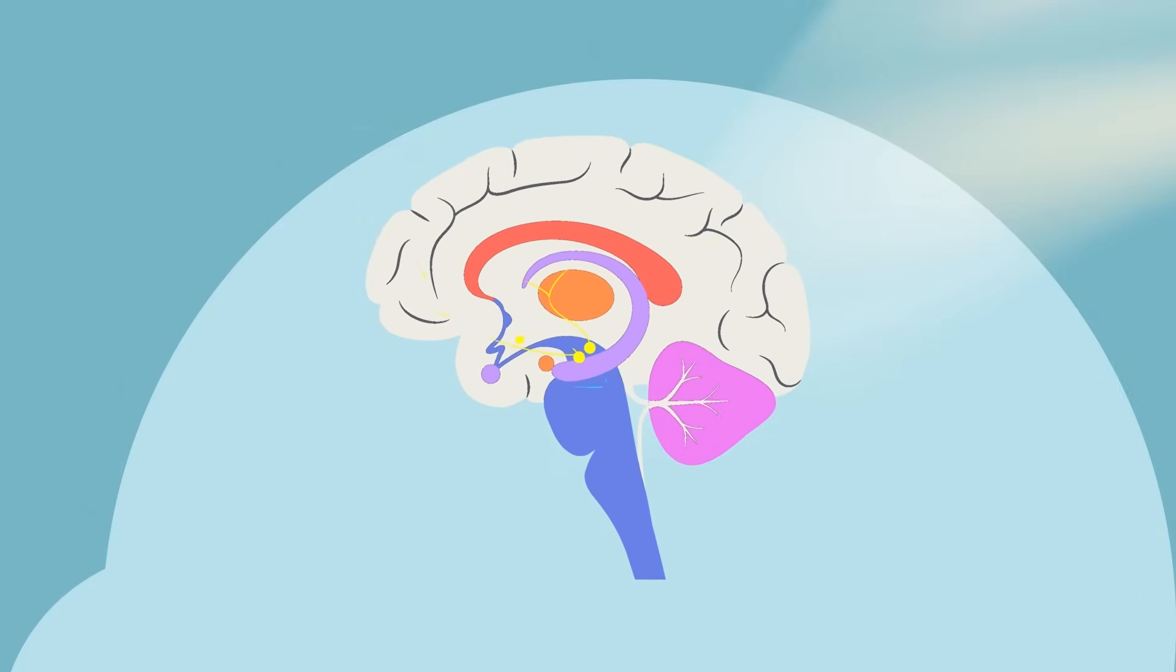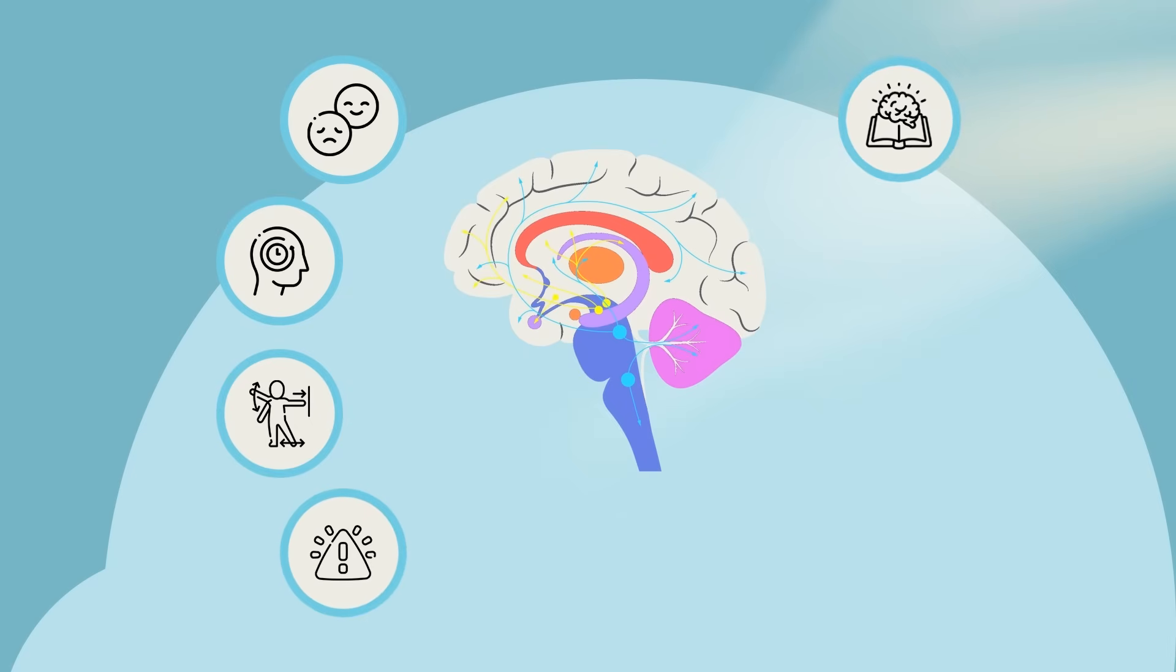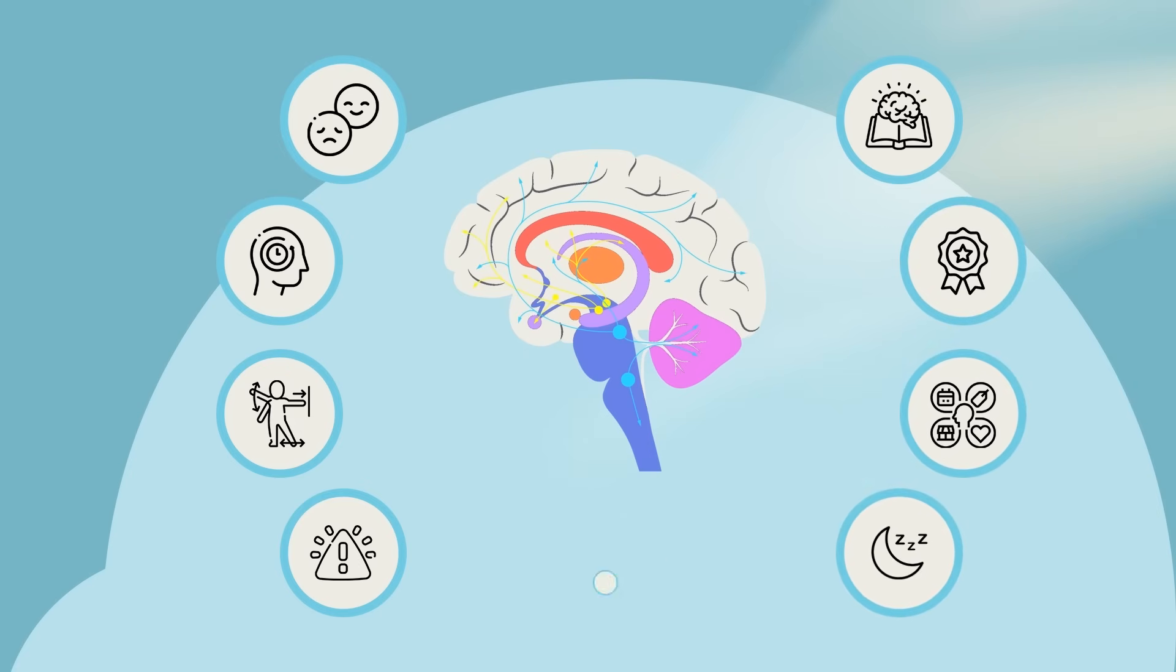Your body uses dopamine to send messages that control your mood, memory, movement, attention, learning, pleasurable reward and motivation, behavior and cognition, sleep and arousal, and lactation.